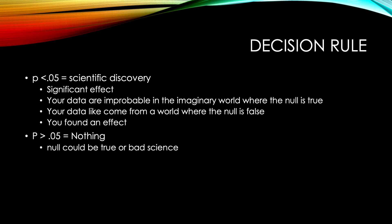This leads to our decision rule for p-values. P-value less than 0.05 is a scientific discovery — a significant effect. Your data are improbable in the imaginary world where the null hypothesis is true and your IV has no impact on your DV. Your data likely come from a world where the null is false, meaning there is an impact of your IV on your DV in the population. When p is greater than 0.05, you know nothing — the null could be true, or you ran bad science.